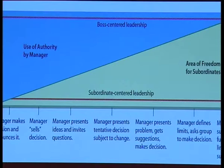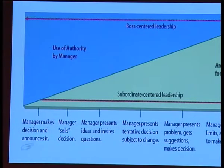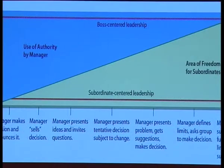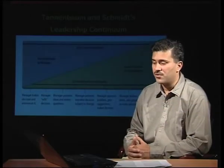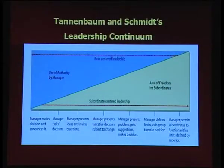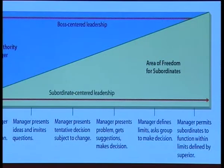In the diagram of Tannenbaum and Schmidt's leadership continuum, the blue zone at the top represents use of authority by the manager. At the extreme left, the manager uses authority fully — the manager makes the decision and announces it, which is the autocratic style. When manager authority is high, subordinates have no freedom in the decision-making process.